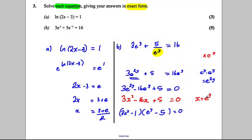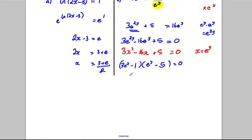Therefore we get two potential answers: 3e^y take away 1 is 0, or e^y take away 5 is 0. So solving this, we would get e^y is equal to a third, and e^y is equal to 5.